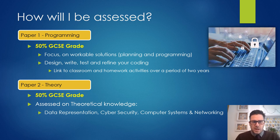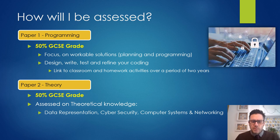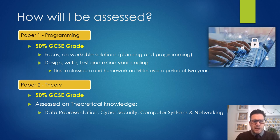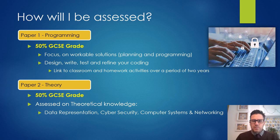In terms of how you'll be assessed, there are two papers. Paper 1 will primarily concentrate on programming and problem solving — 50% is focused on workable solutions, planning, and programming. You'll have the opportunity to design, write, test, and refine your coding. This isn't something you learn over one period; it will evolve over two years, much like learning a new language — you need to keep practising and refining your solutions. Paper 2 is linked to theory, making up the other 50%, covering topics such as data representation — our second unit in Year 9.